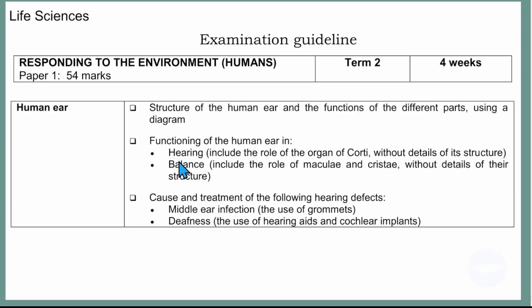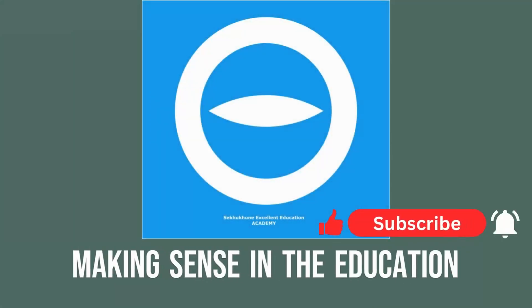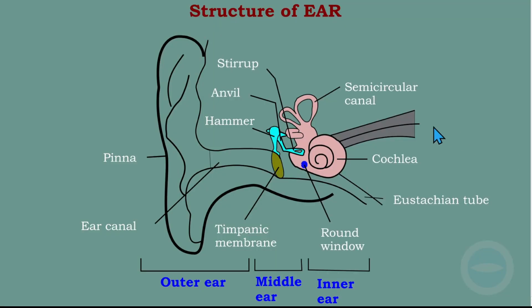Hopefully you have this examination guideline. If you don't have it, you can get it from the Department of Basic Education website and download it there. Here I have the structure of a human ear. You must be able to label this structure. I will show you each part and explain its function.